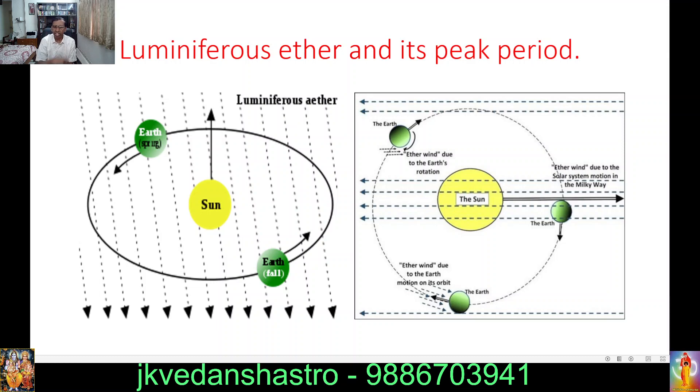See here, the next slide shows the ether wind due to the earth rotation. That ether wind, then when it is very, very at peak, that it shows, due to the solar system motion in the Milky Way. So our earth is revolving around the sun. That all we all know now. Previously, our rishis said, way back, earth is moving around the sun.